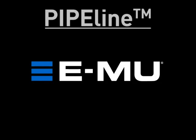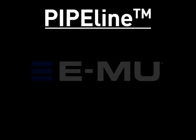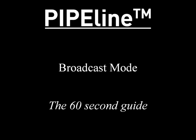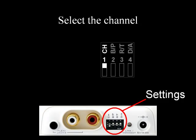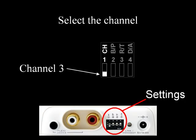The EMU Pipeline. Here's the 60-second guide to using two or more pipeline units in broadcast mode. On the back of your pipeline units, go to the four configuration switches. Using switch 1, choose a channel – 1, 2, or 3. All your pipelines must be on the same channel.